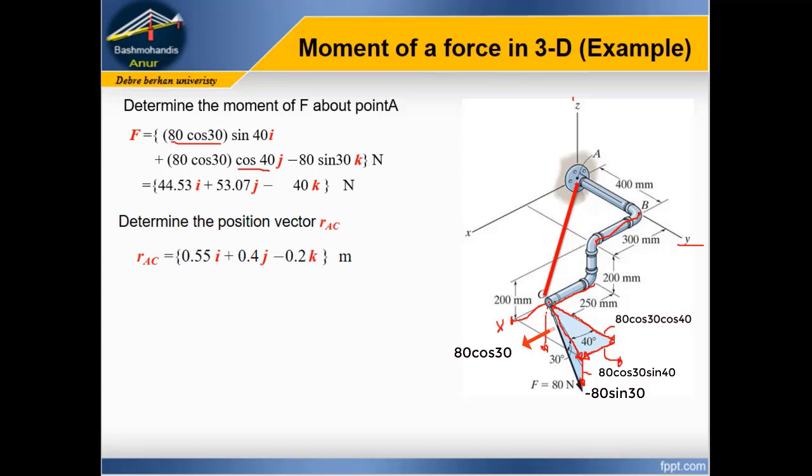What about in the j direction? From point C, 400 mm, plus 0.4 j. In the k direction, minus 200 mm downward. Therefore, minus 0.2 k.